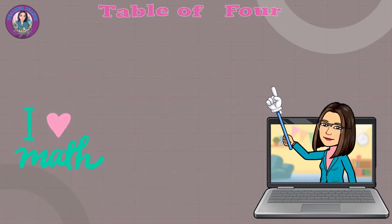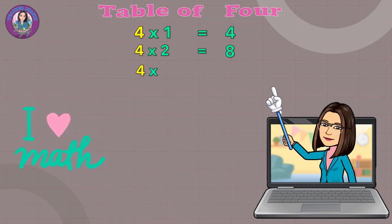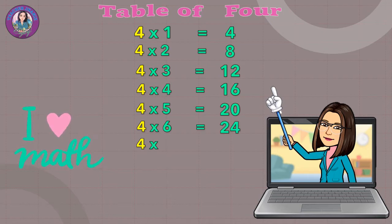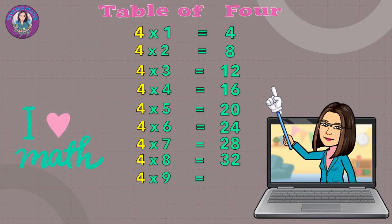Table of 4. 4 x 1 equals 4. 4 x 2 equals 8. 4 x 3 equals 12. 4 x 4 equals 16. 4 x 5 equals 20. 4 x 6 equals 24. 4 x 7 equals 28. 4 x 8 equals 32. 4 x 9 equals 36. 4 x 10 equals 40.